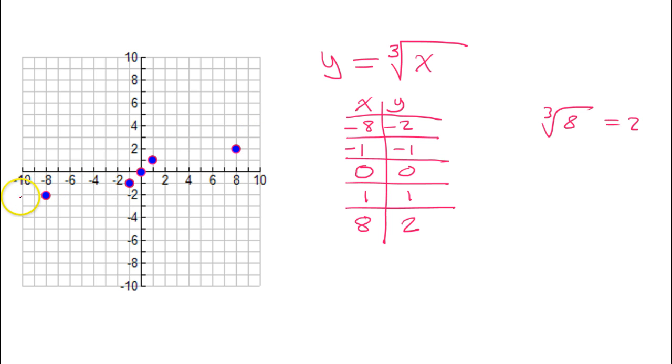Now, if we connect the dots to see what's going on in between the points, it's going to make this type of a curve. And then it will continue like that forever. So, this is what the parent function, y equals the cube root of x, looks like.